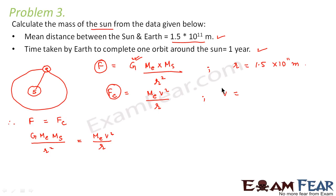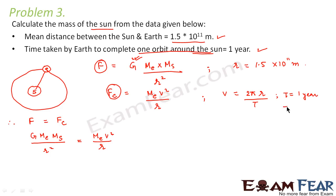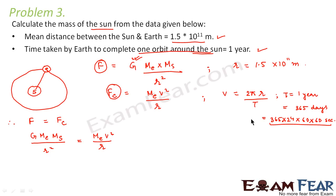The orbital velocity v = distance / time = 2πR / T, where 2πR is the circumference of the circular orbit and T is the time to complete one orbit. The question states T = 1 year = 365 days = 365 × 24 × 60 × 60 seconds. We will use this expression for v in our equation.